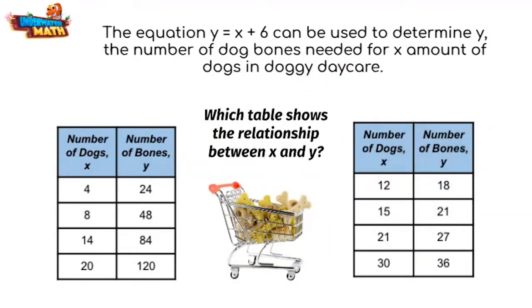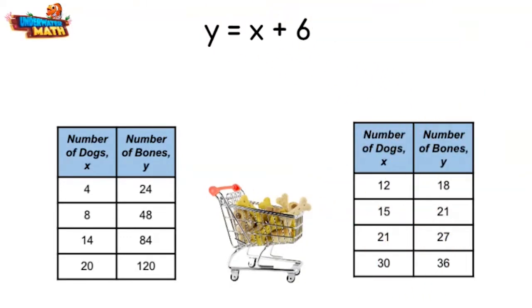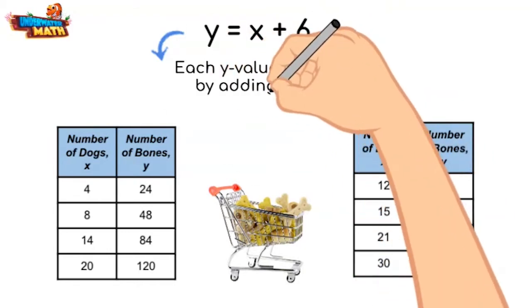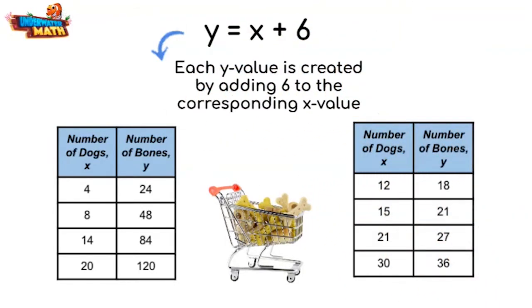Take a closer look at this rule. It states that each y-value is created by adding 6 to the corresponding x-value. So the correct table will show this for every pair of values. If we add 6 to each x-value in the first table, we get an untrue statement. The rule does not work for this table.